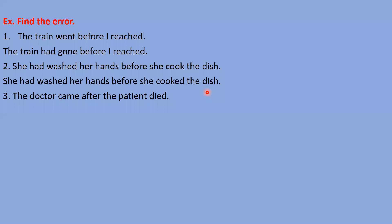The correct answer is: 'The doctor came after the patient had died.' Which action is of past of past? The patient dying is past of past — for this we need to use past perfect tense, and for what happened after, we use simple past tense. So the doctor came after the patient had died. Yes, very good, right answer.